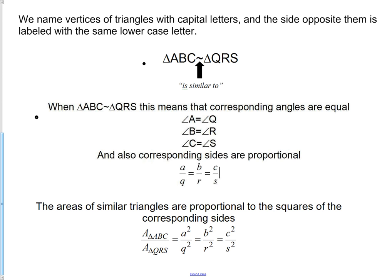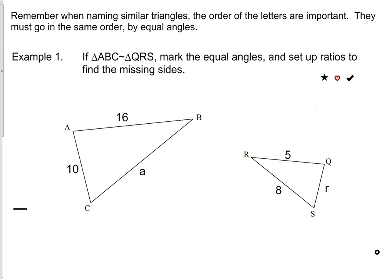Now let's use this information to actually do a question. Remember our naming convention: when naming similar triangles, the order of the letters is very important — they must go in the order of the equal angles. So for example, number one says: if triangle ABC is similar to triangle QRS, mark the equal angles and set up ratios to find the missing sides. The first thing we're going to do is mark the equal angles. This little bit of information gives us all that important information.